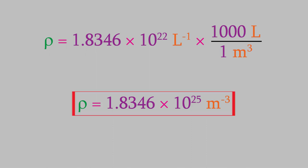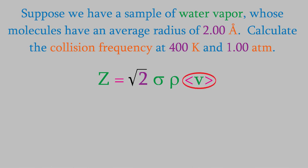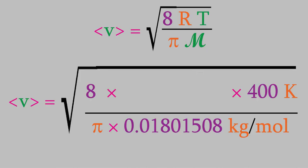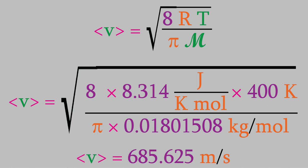Finally, we need to calculate the average velocity. In this case, we have 400K for the temperature and 0.018015 kilograms per mole for the molar mass of water. We need r, the gas law constant again, but this time we don't have any data with units of liters or atmospheres, so we'll use the other version of r, 8.314 joules per kelvin mole. When we calculate the velocity, we find out that it's 685.625 meters per second.